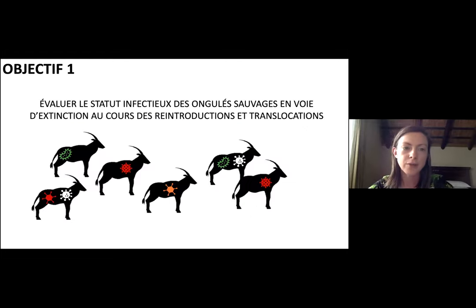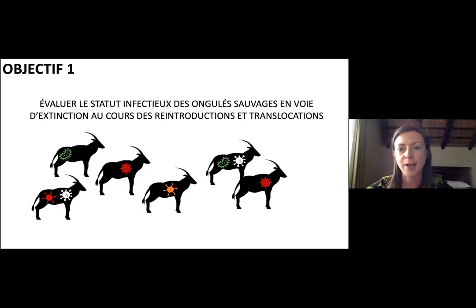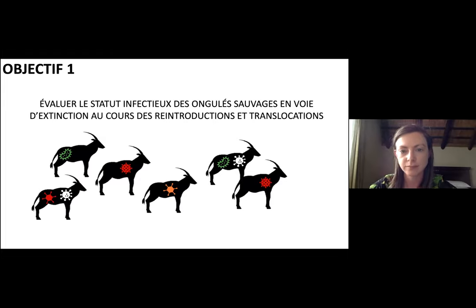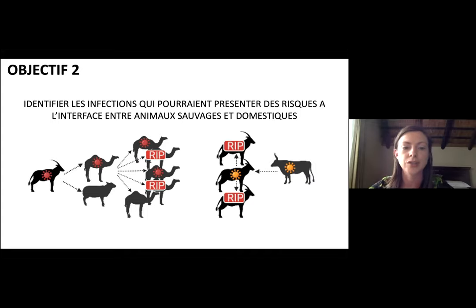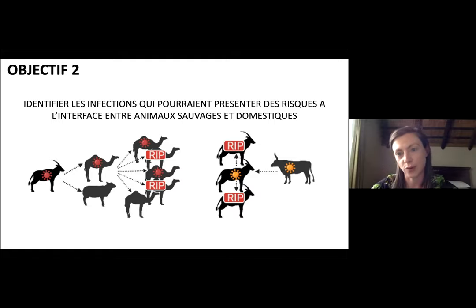In terms of goals, the first is to evaluate the infection status of wild ungulates and threatened wild ungulates and see how this relates to reintroductions. The second objective is to identify which infections are particularly likely to pose risks at the wildlife-livestock interface — and we're interested in risks in both directions: how infected wild ungulates pose a risk to livestock, and what risks livestock infections pose to wild or reintroduced animals.